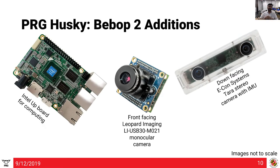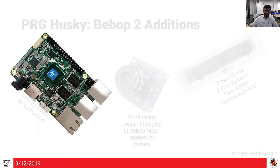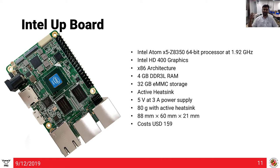For the custom additions — shown in red — we added an Intel Upboard for onboard computing, with an Atom x5 processor at 1.92 GHz, 4 GB RAM, 32 GB storage, requiring about 15 watts of power, and weighing about 80 grams with an active heatsink. We also added a 2mm carbon fiber chassis cut by waterjet, Leopard Imaging monocular camera for the front, a Tara stereo camera for the downward-facing side, and 3D-printed Onyx landing legs.